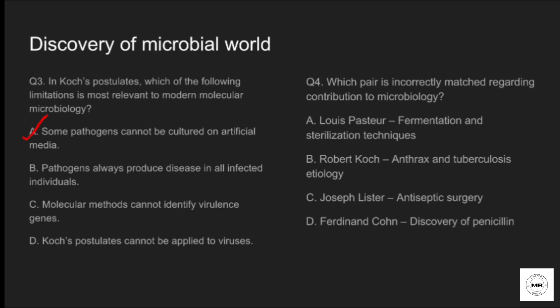Question four: which pair is incorrectly matched regarding contribution to microbiology? Option A: Louis Pasteur — fermentation and sterilization technique. Option B: Robert Koch — anthrax and tuberculosis etiology. Option C: Joseph Lister — antiseptic theory. Option D: Ferdinand Cohn — discovery of penicillin. The correct answer is option D. Ferdinand Cohn actually classified bacteria and discovered endospores; it was Alexander Fleming who discovered penicillin.